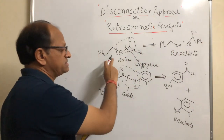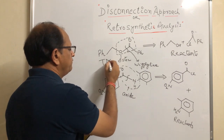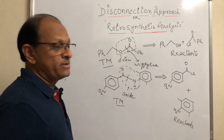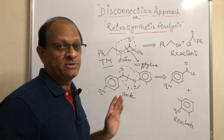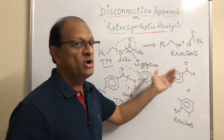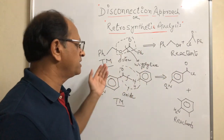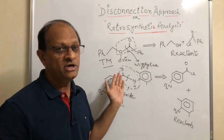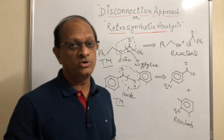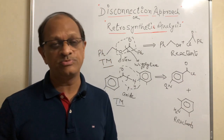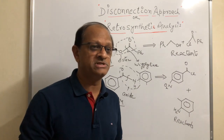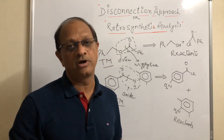और ये जिसका हमने discussion किया है — इन reactants से इस structure का synthesis होता है — तो this is known as target molecule। तो ऐसे हमें एक target molecule, इस disconnection process में आगे study करेंगे। ऐसे target molecule को हम उसके reactants में convert करेंगे, और फिर synthesis के time इन्हीं reactants से हम उस target molecule को synthesize करते हुए show करेंगे। In short, जो disconnection approach है वो एक bigger molecule — एक target molecule — को उसके reactants में convert करना है, और फिर उन reactants से उसी target molecule को synthesize होते हुए show करना है। Thank you.